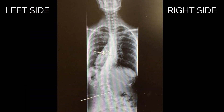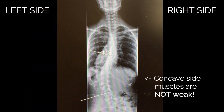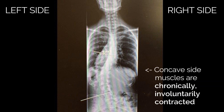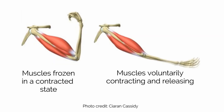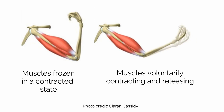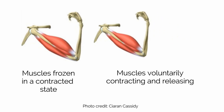Some people say that the muscles on the concave side of the curve are weak, but they're actually chronically contracted. And over time, the contraction of these muscles becomes so deeply learned by the nervous system that the person totally loses voluntary control of the muscles. They're basically frozen in a contracted state — so they're not weak by any means. The person has just lost the ability to voluntarily contract and release them.